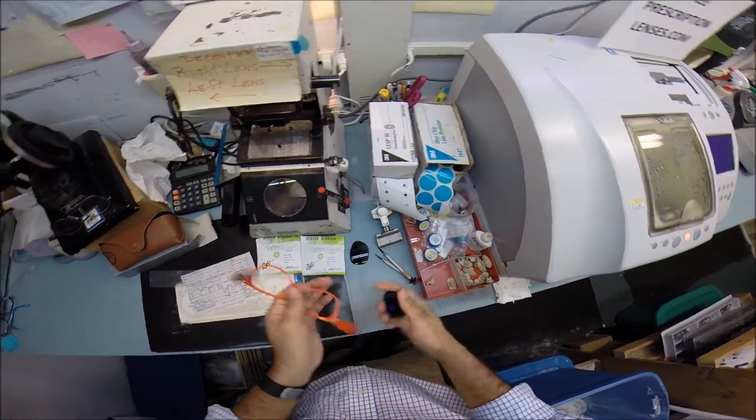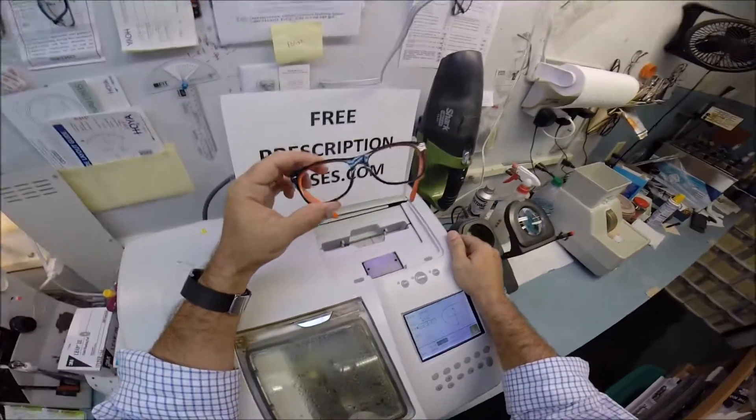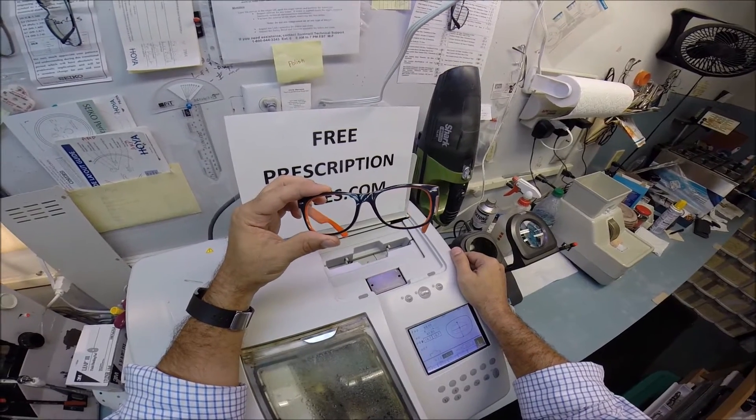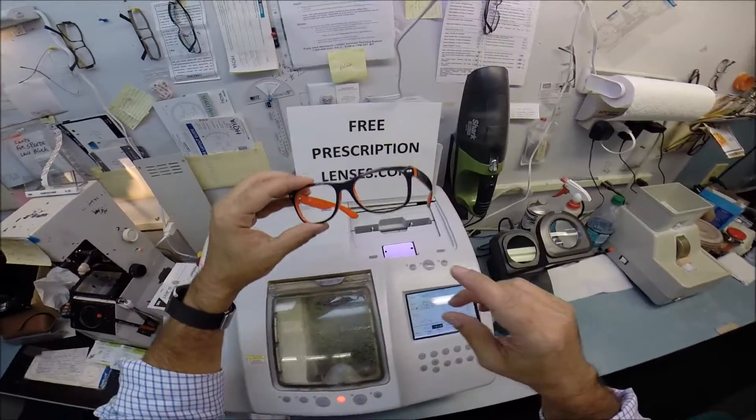These are the heavy glass original lenses that if you drop on the ground they will shatter or worse if you're hitting the eye and they crack. It will slice your eye wide open. Instead, I'm going to cut unbreakable bulletproof lenses to go in here.